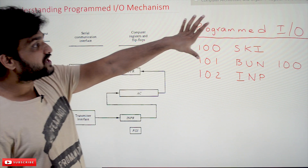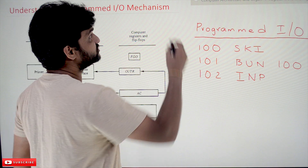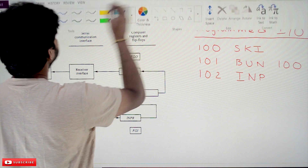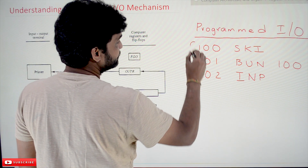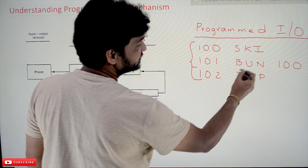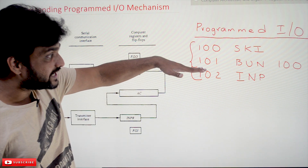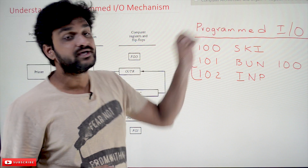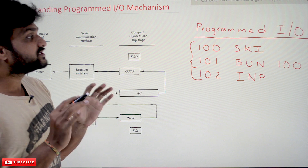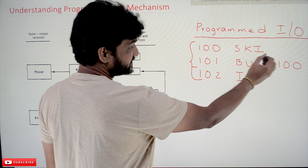With programmed I/O, whenever an input/output instruction has to be executed, this part of the program will get executed. The input instruction will get executed, and these lines of code will get executed in order to perform an input operation. This is what we call programmed I/O. The instructions involved here are SKI and INP, which were discussed in our input/output instructions video.